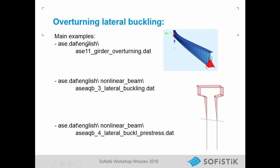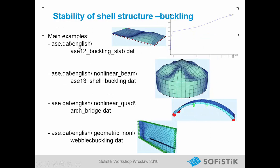Here are some further examples for stability problems. In the ASE-DUT folder: ASE 11 overturning. For nonlinear beams: ASE AQB3 lateral buckling, with or without pre-stress. For shells: ASE 12 plate buckling, ASE 13 shell buckling, an arch bridge nonlinear quad with cracked concrete without reinforcement, and web buckling.